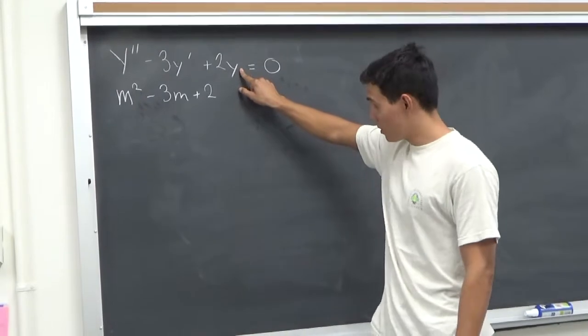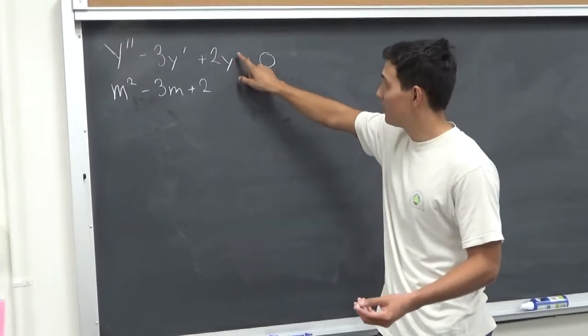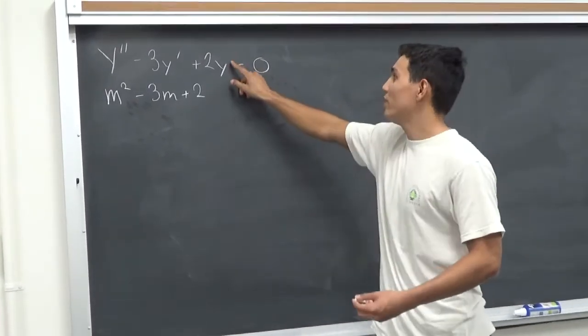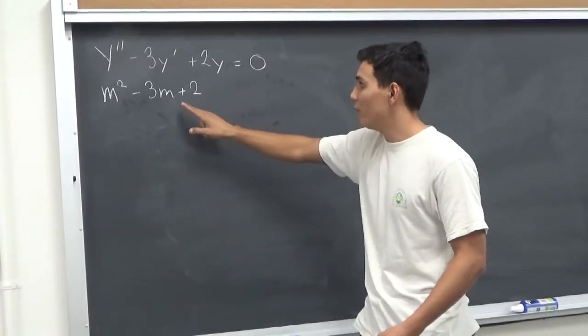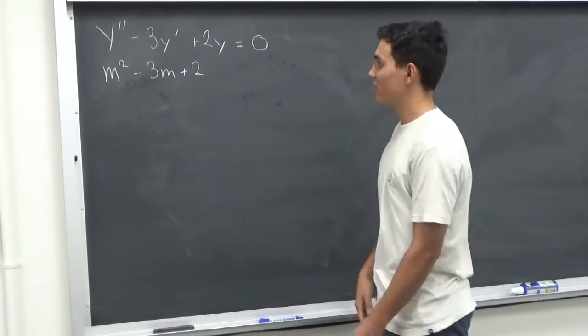And this is the part that's the trickiest, is that you see that there's just y. So y to the what? This is y to the 0, 0 derivative. So it's just 2, because m to the 0. So that's how we represent it.